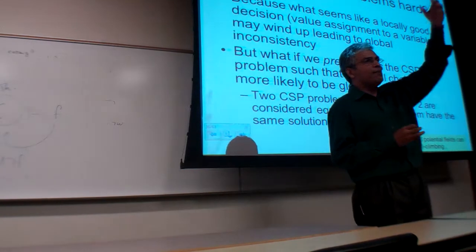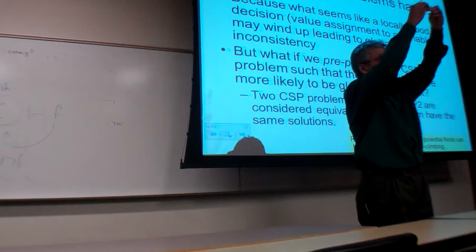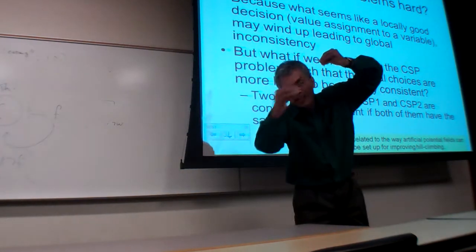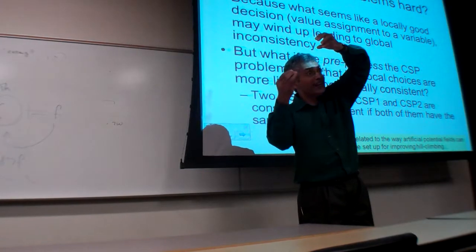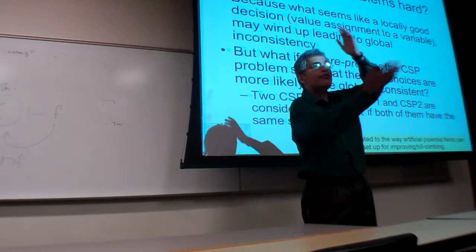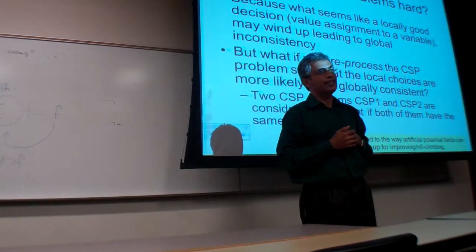So if I pick an order of variables and give the first variable a value, second variable a value, there's always going to be a value for the third variable, let's say. Then I know that I never have to backtrack over the third variable's assignment.